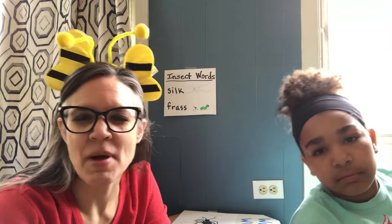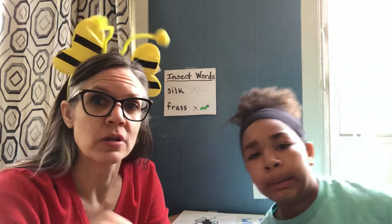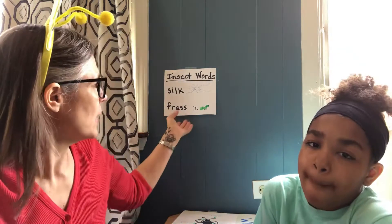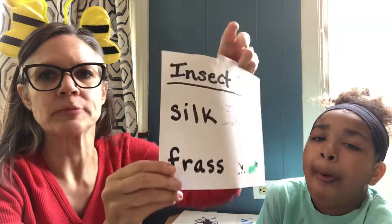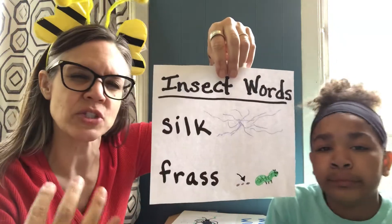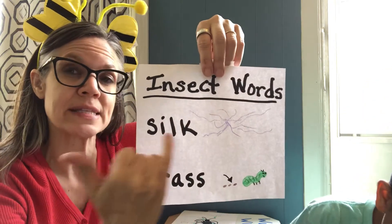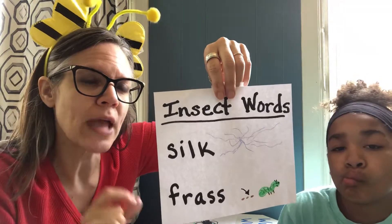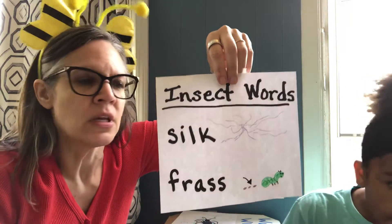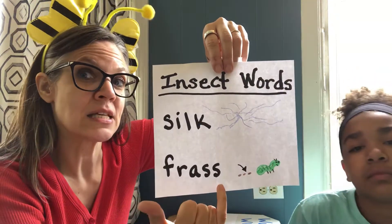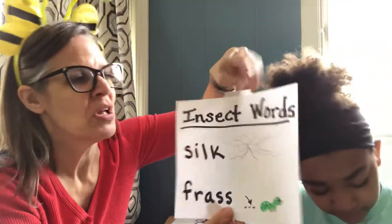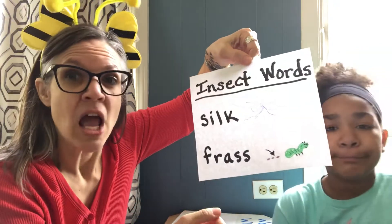Hi, it's Mrs. Arbok and India, and we're going to talk a little bit about what an insect is. Earlier we were looking at our little jars of caterpillars, and we had a couple of words that we learned from that. Remember the webby stuff in the jar? It's not a spider web — it's called silk, and they spin that to make a little protective area for themselves on the leaves. And do you remember what frass is? So we have two new words: silk and frass.